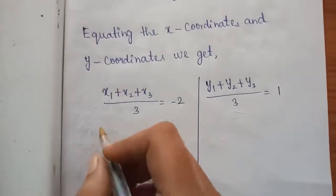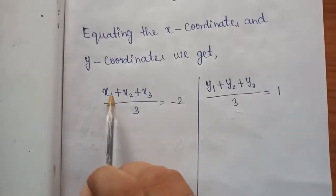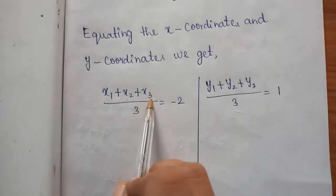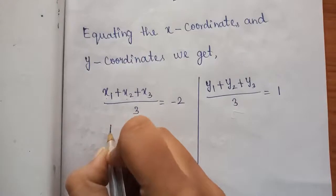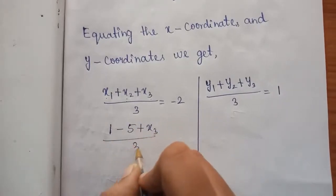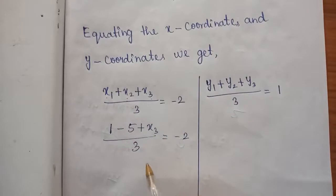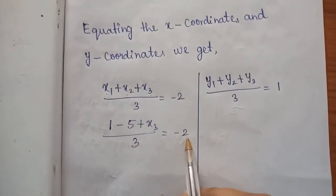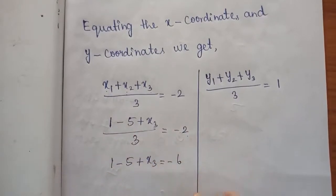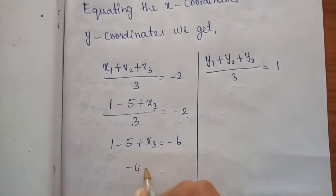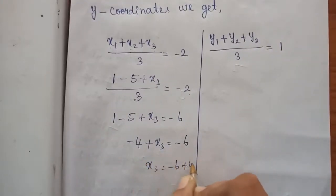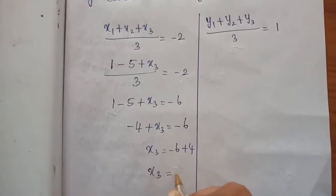Substituting the known values: (1 + (-5) + X3)/3 = -2. By cross multiplication: 1 - 5 + X3 = -6, so -4 + X3 = -6, therefore X3 = -6 + 4 = -2.